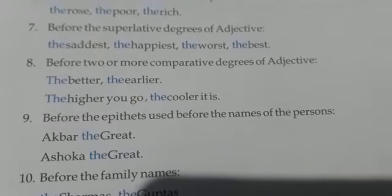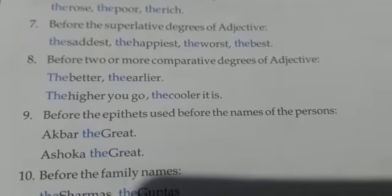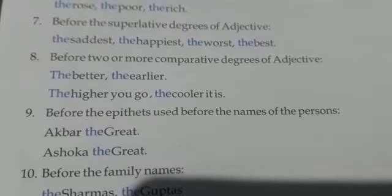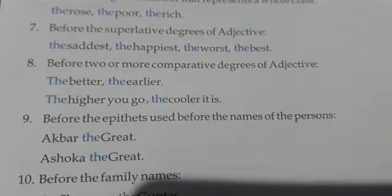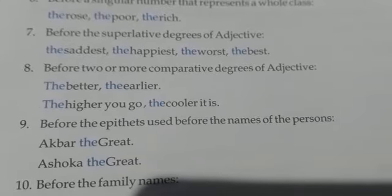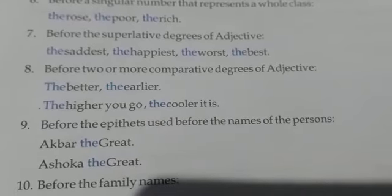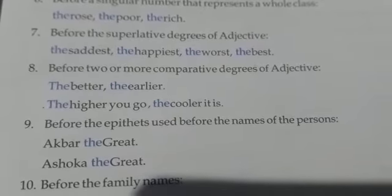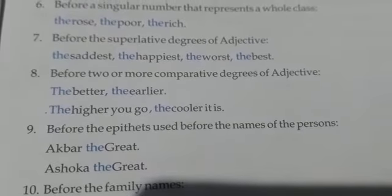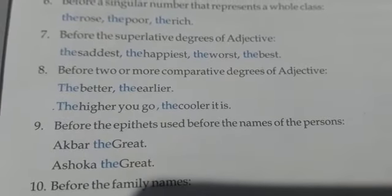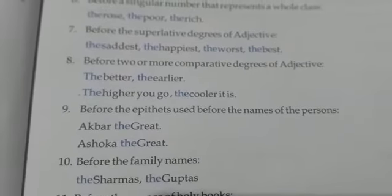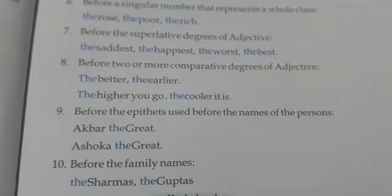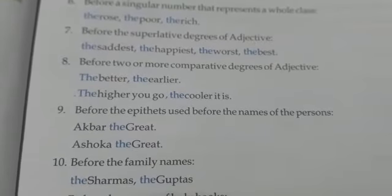Before the epithets used before or after the names of a person. For example, Akbar the Great, Ashoka the Great. Here 'Akbar' is the person's name and 'the Great' is the epithet, and 'the' is used with the epithet.